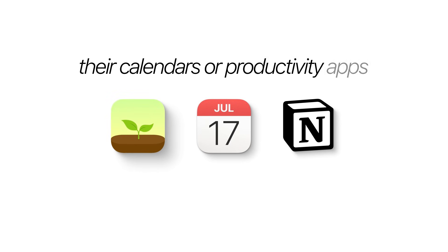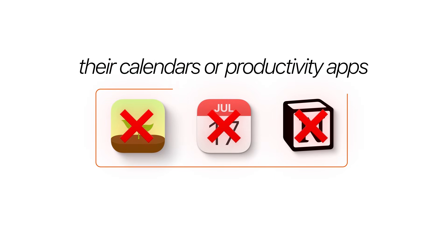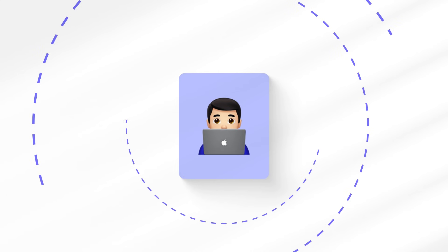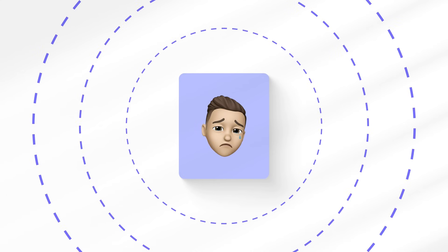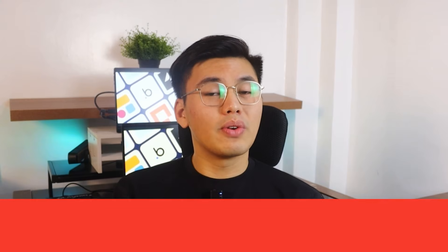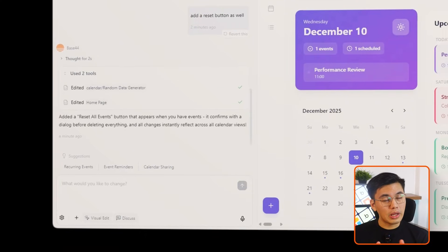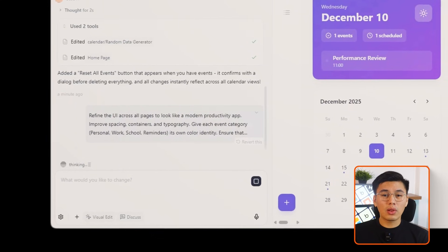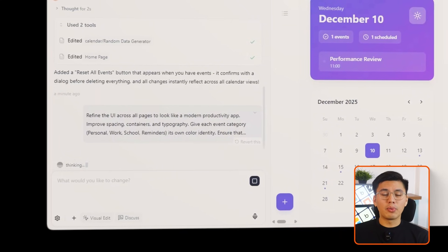This is usually the moment when people realize why their calendars or productivity apps never feel satisfying to use. It's not the features — it's the layout. Even the most organized person can get overwhelmed if the interface looks cluttered or everything blends together visually. A clean productivity app should feel calming, not chaotic. So now that the foundation is built, we're going to turn it into something that actually feels like a modern tool you'd want to open every day. I'll prompt Base44 with: refine the UI across all pages to look like a modern productivity app.